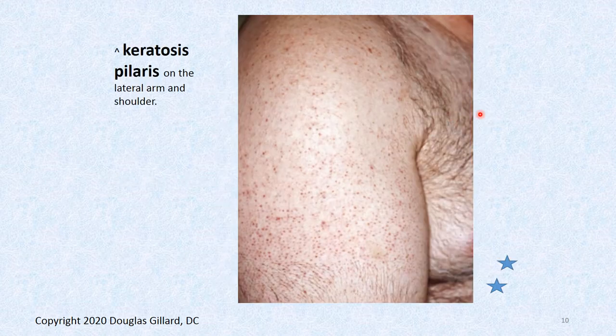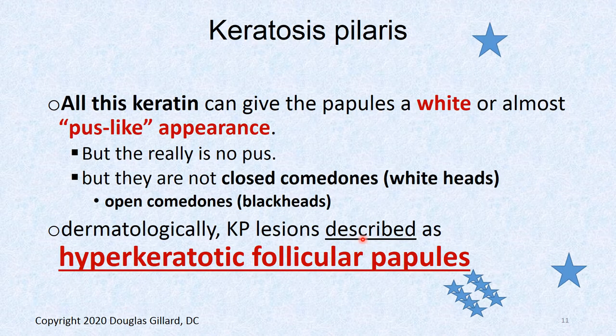Here's some KP on the arm — it likes the lateral arm and the thighs. Some of you are going, 'Oh yeah, I've seen that.' All this keratin can, if it piles up enough, start to give the little mound a white look — almost like it's filled with pus or like it's a whitehead. But again, you can't pop it.